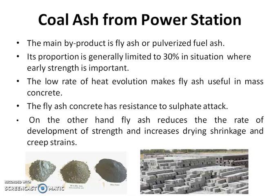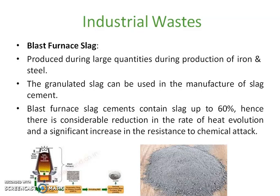Next is coal ash, also known as fly ash or pulverized fuel ash. It is obtained from power stations as a byproduct. Up to 30% replacement can be achieved with this material. The heat of evolution is very low, and it is resistant to sulfate attack. The major disadvantage is that when you increase the usage of fly ash, drying shrinkage and creep will get increased.